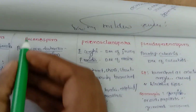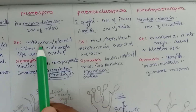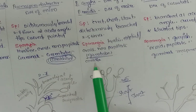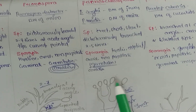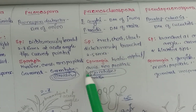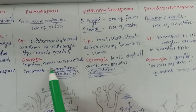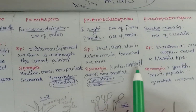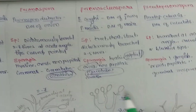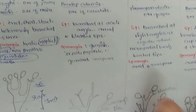The name Peronosclerospora itself indicates its similarity to Peronospora. It shares similar characters: dichotomously branched at an acute angle, and it also germinates through a germ tube. The sporangia are ovoid and non-papillate, but the difference is that sporangia may be elliptical or ovoid — that is the key distinguishing feature.